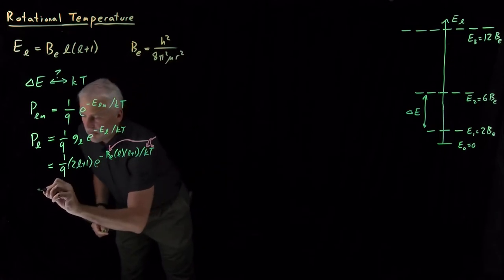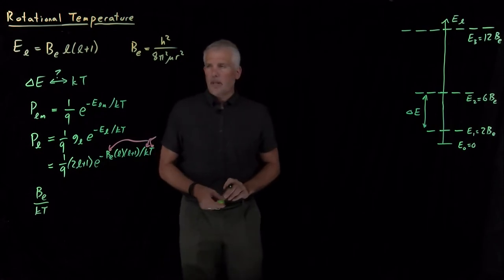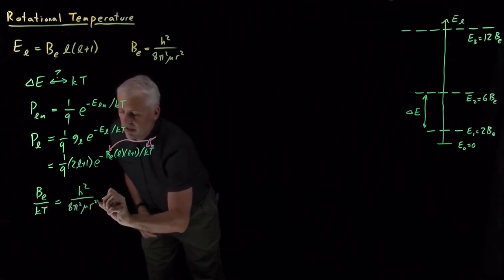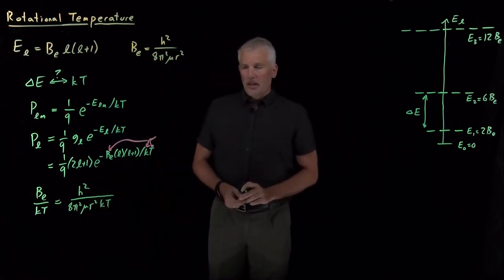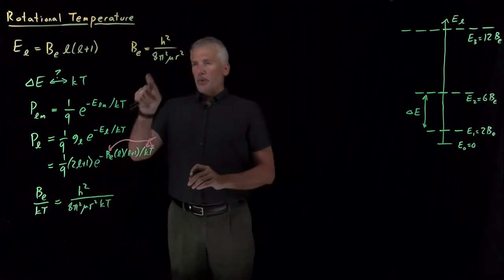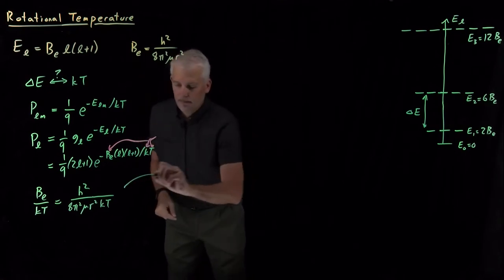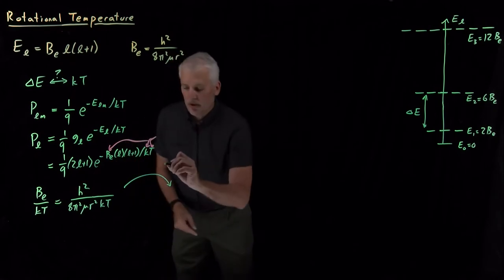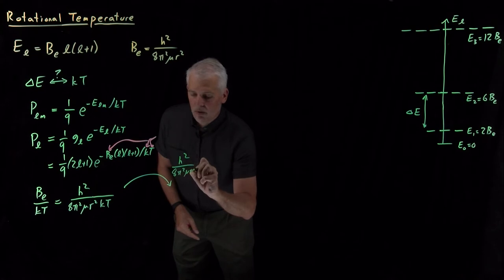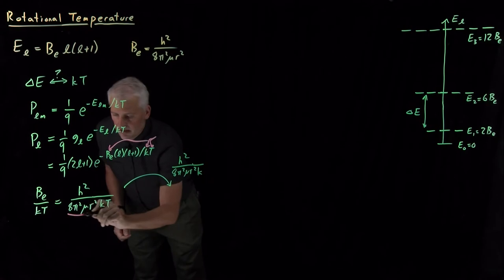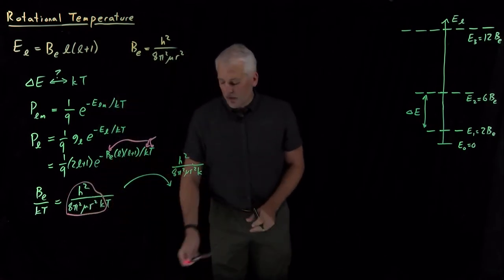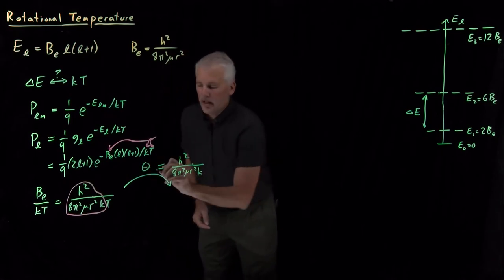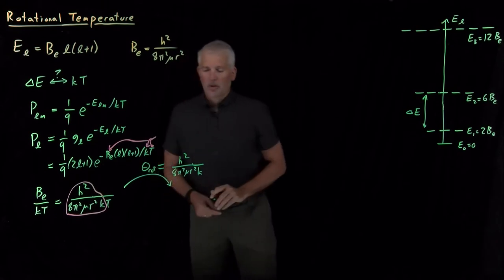We're particularly interested in the quantity B_e/kT. The rotational constant B_e equals h² over 8π²μr², and dividing by kT gives the ratio of interest. Just as we lumped constants into the rotational constant before, we'll do that one more time — now that Boltzmann's constant has entered, we define a new constant by taking h² over 8π²μr²k, lumping all those constants into one.